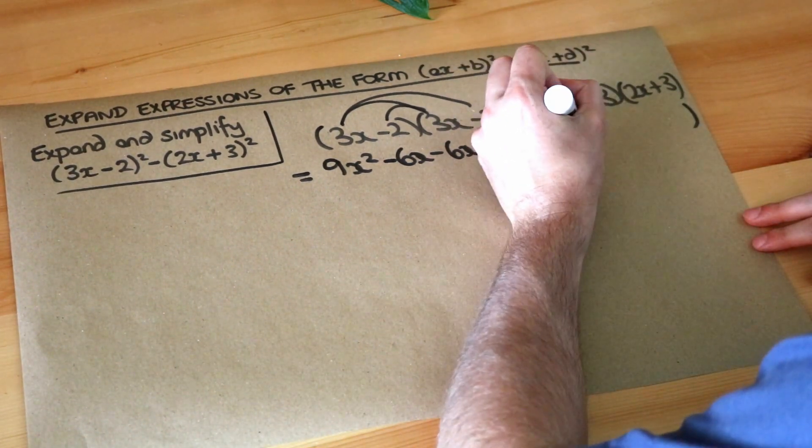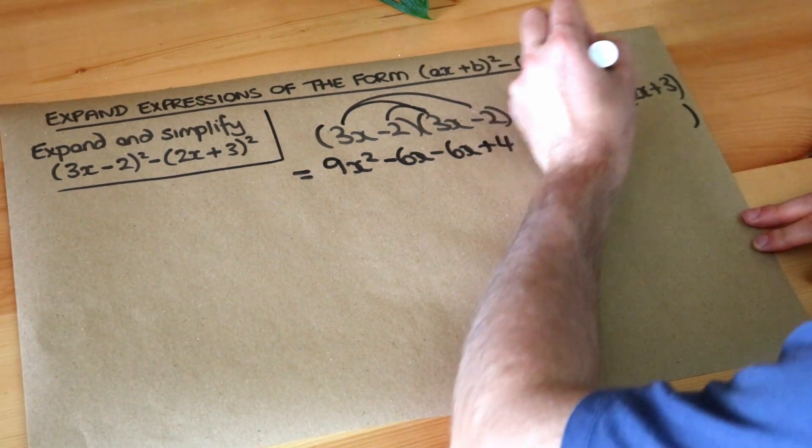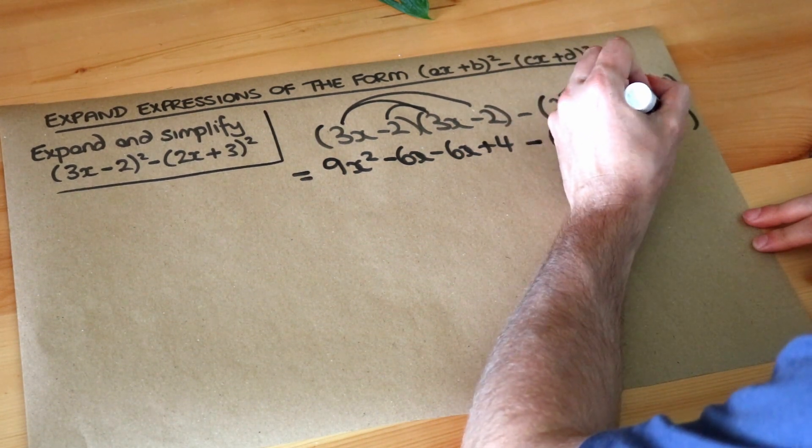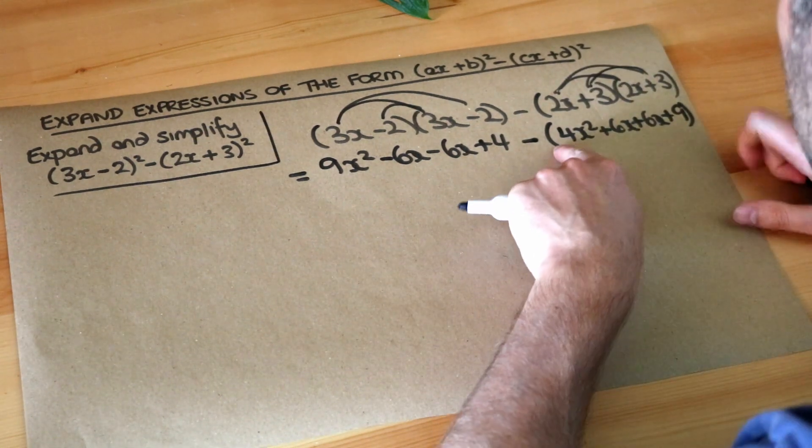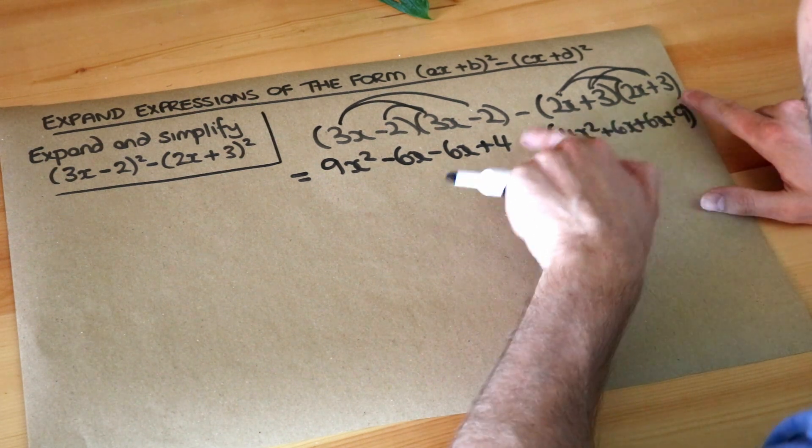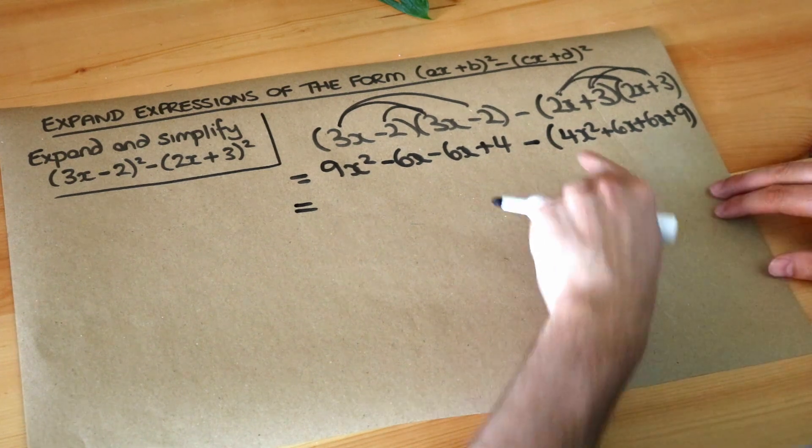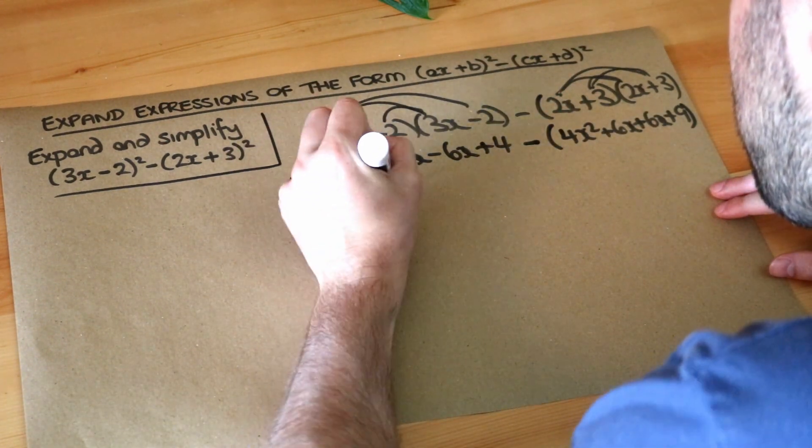So we've got 2x times 2x, that's 4x², 2x times 3 is 6x, you've got another 6x, and you've got +9. And these brackets are important because if I didn't have them you'd be subtracting the 4x² but you'd be adding the 6x when actually you want to subtract the 6x. So the last step is then we use that minus in front of the bracket to get rid of the bracket.